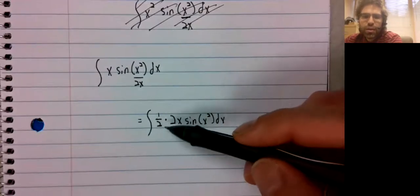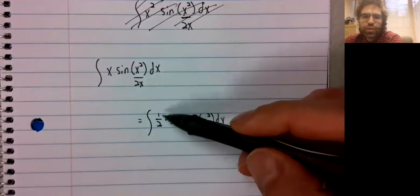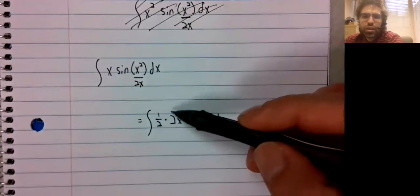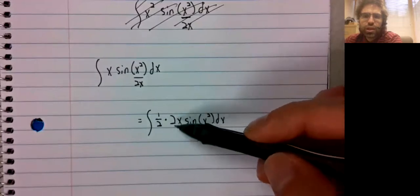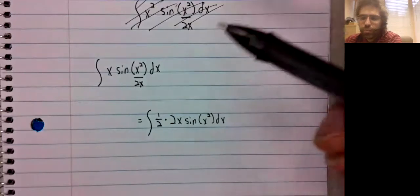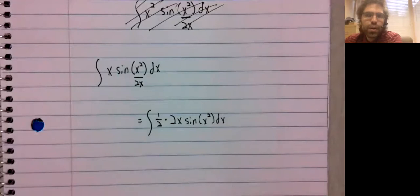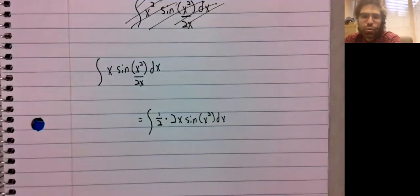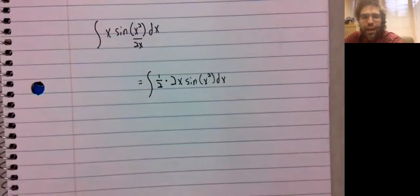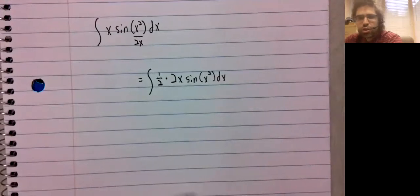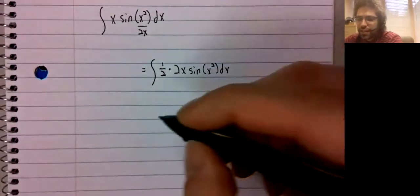The way we get away with this is by inserting the 2, multiplying by 2, but then multiplying by the reciprocal, by one half, so you're not changing anything.